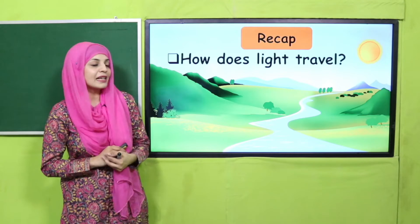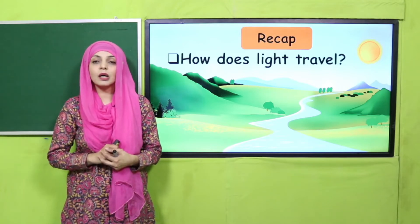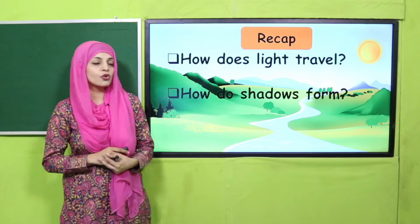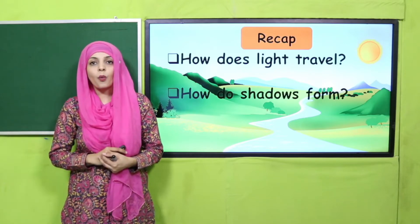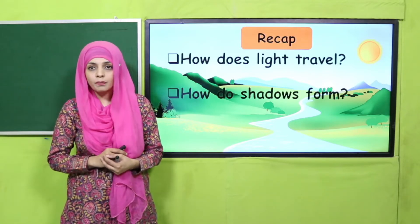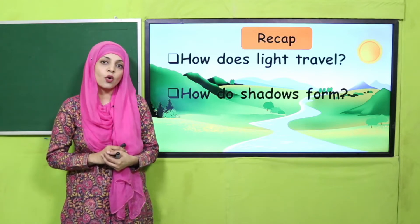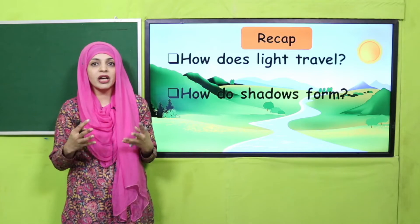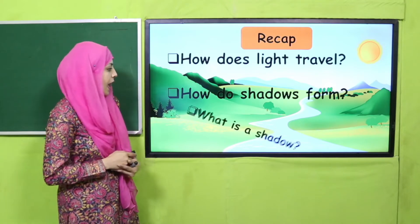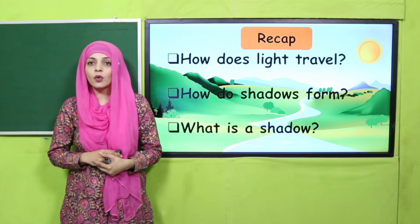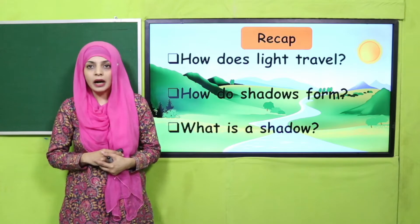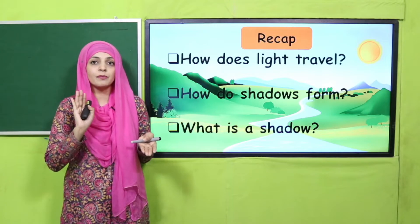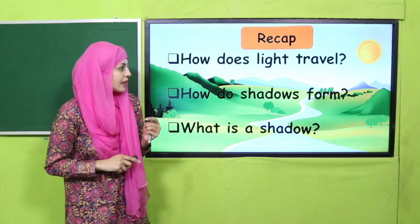You have to answer a few questions. How does light travel? Light travels in a straight line. Very good. How do shadows form? When the path of light is blocked by an object, a dark part is formed behind the object - that is called its shadow. And what is a shadow? A shadow is a dark portion that forms as a result of light blockage.